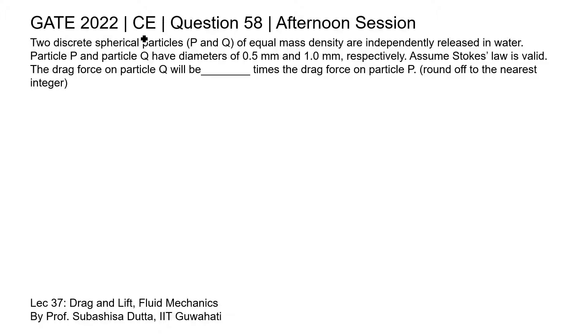This is question 58 of civil engineering paper of GATE 2022 afternoon session. Two discrete spherical particles P and Q of equal mass density are independently released in water. Particle P and particle Q have diameters of 0.5 mm and 1.0 mm respectively. Assume Stokes law is valid. The drag force on particle Q will be blank times the drag force on particle P.